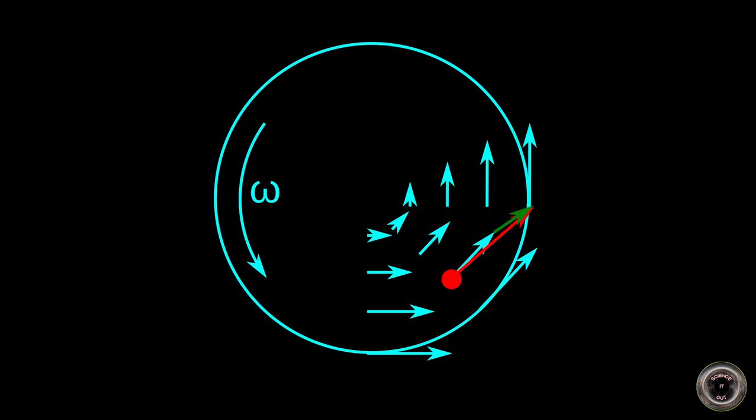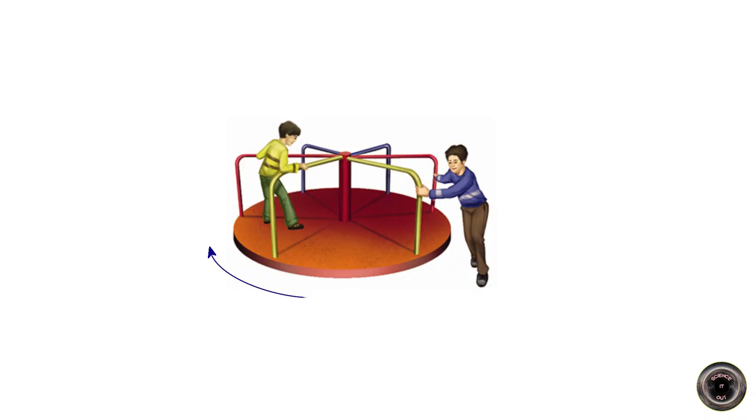And even though these forces are fictitious, which sounds like not real, they can have very real effects. That's because when you want to cancel their influence, you need to use real forces. If you want to sit still on a spinning merry-go-round, you need a force to balance the centrifugal force.